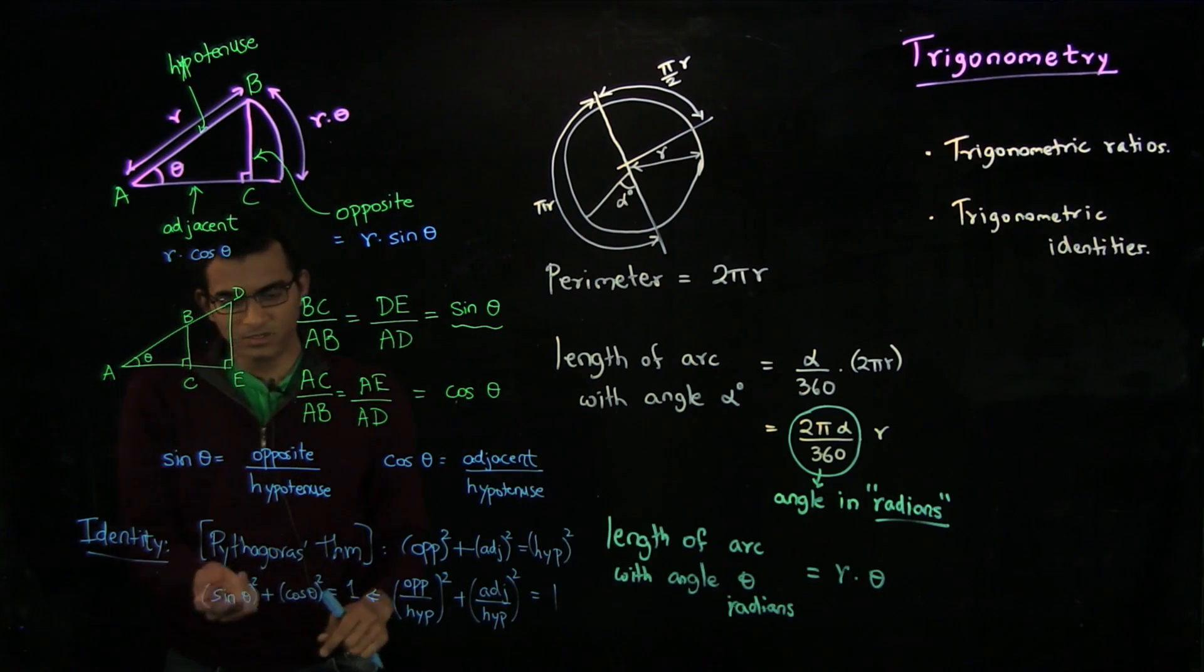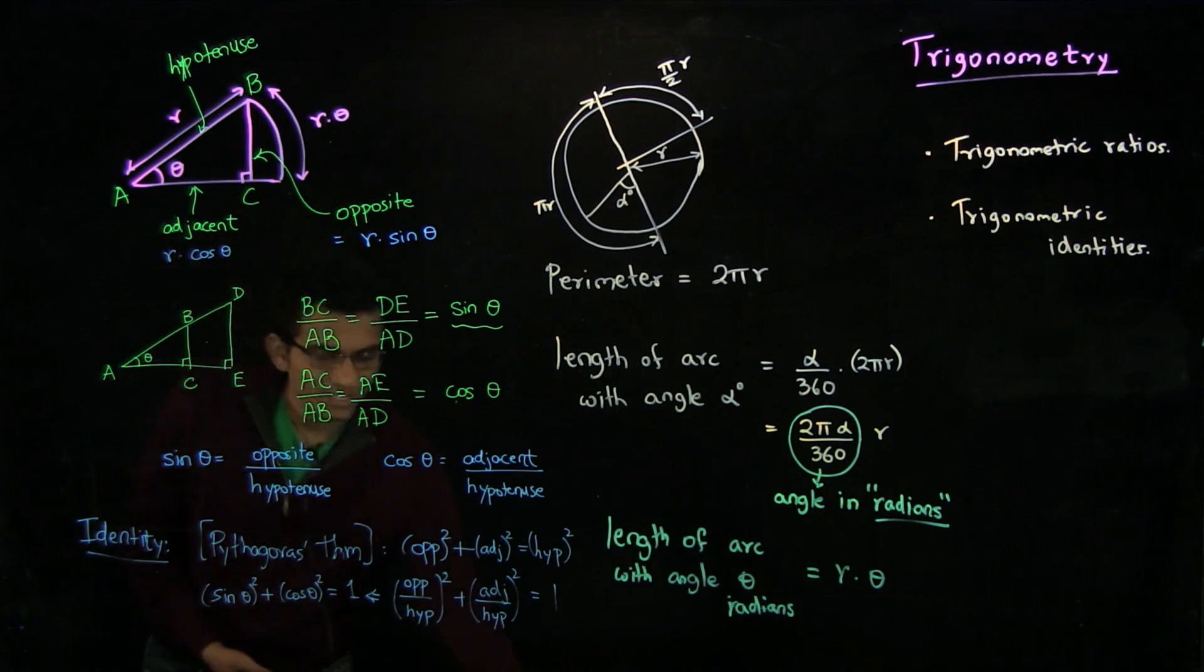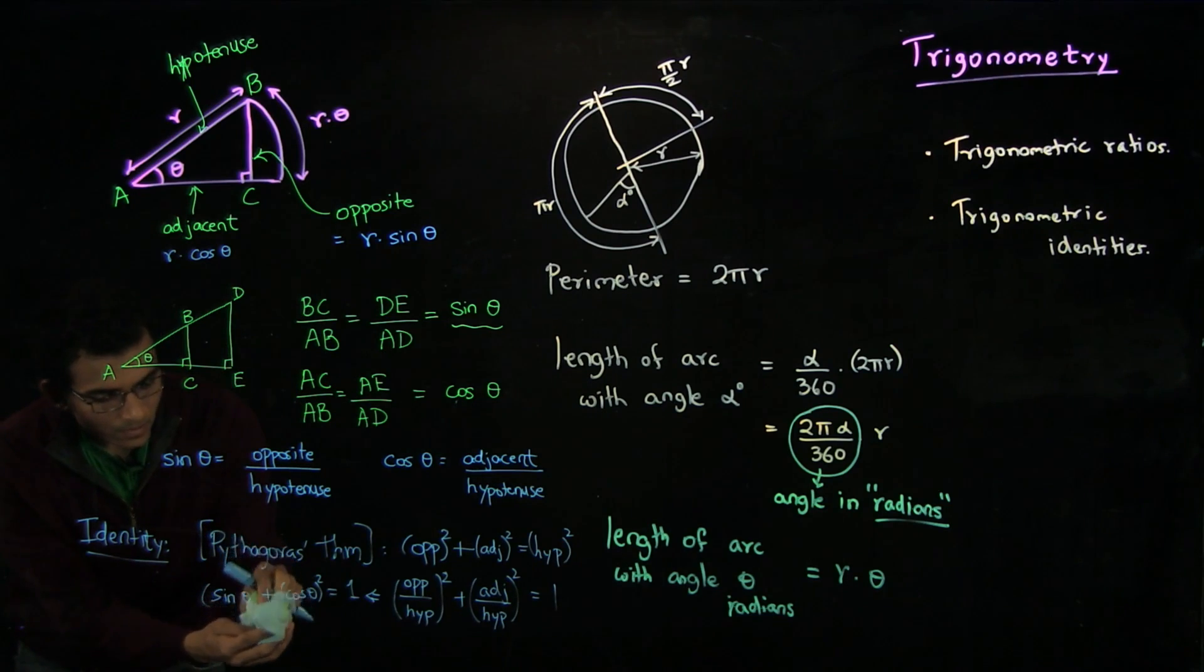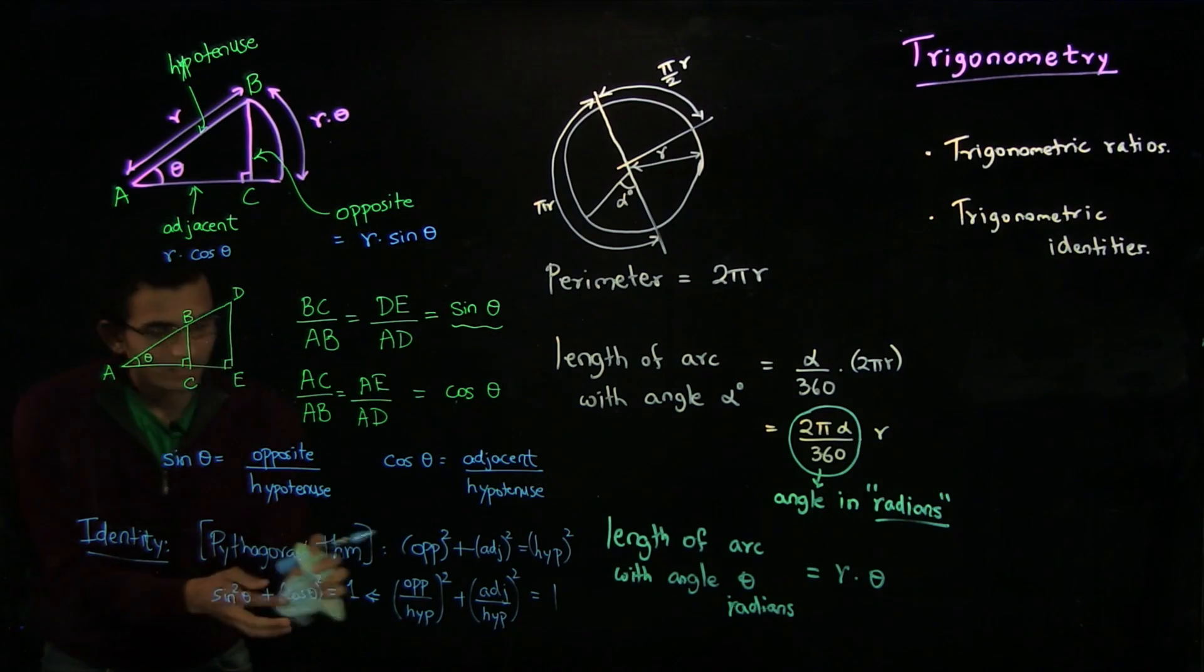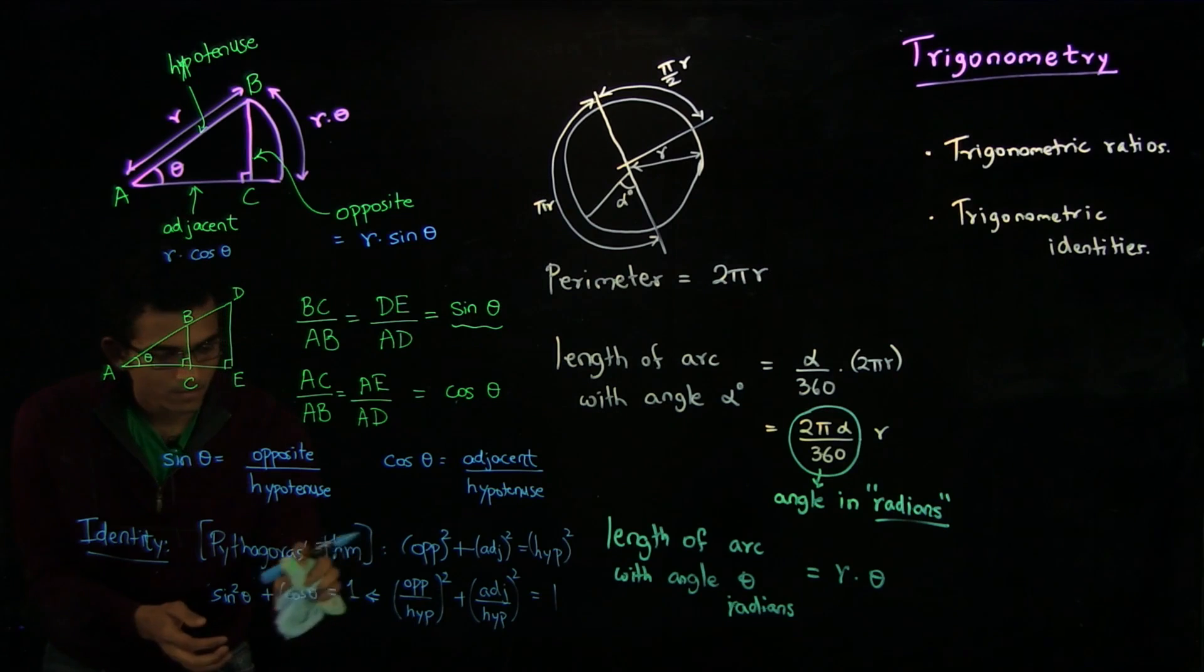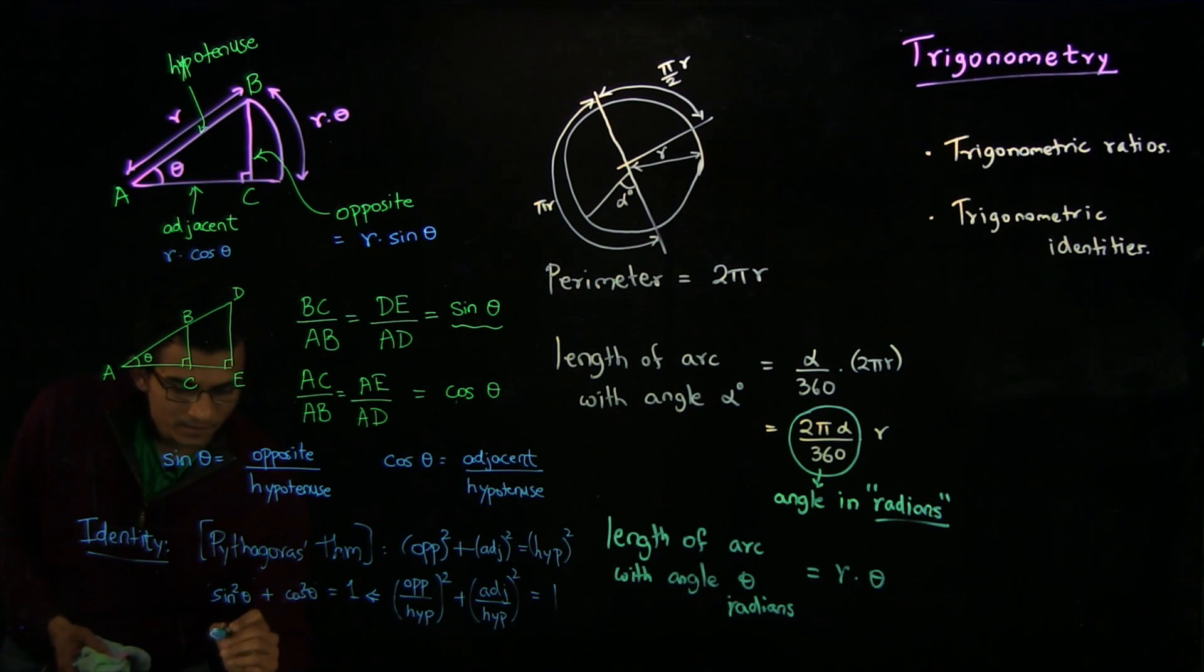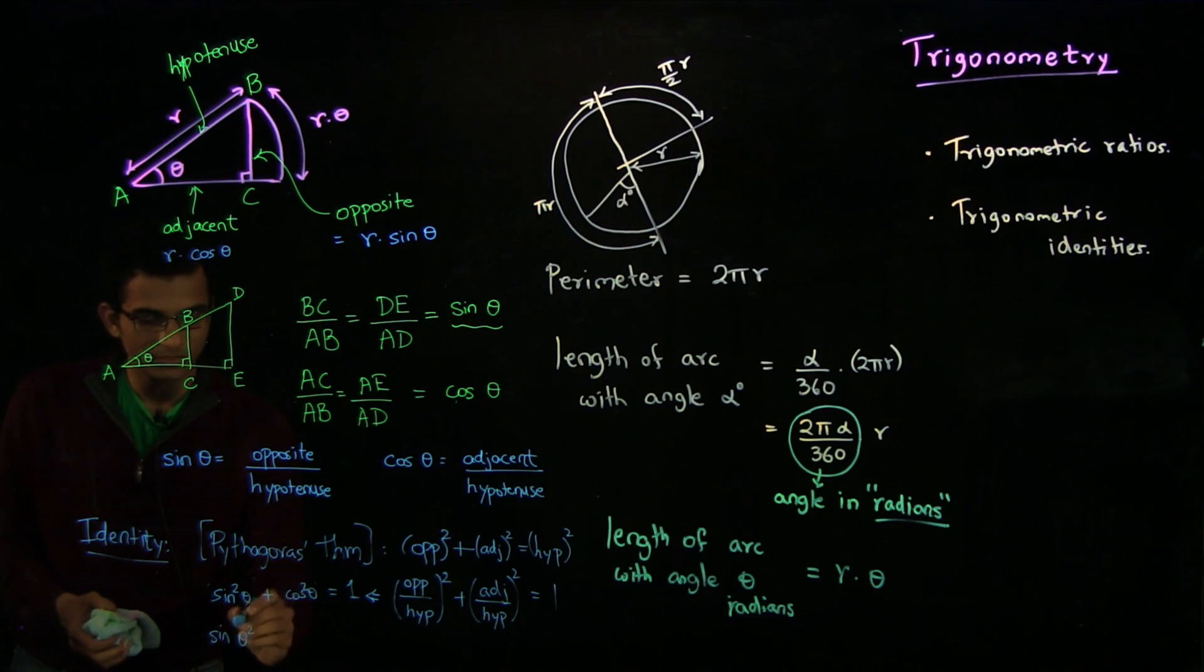But if you look at our definitions of sin theta and cos theta, this tells us that sin theta square plus cos theta square is equal to 1. Now, a usual convention to write sin theta square is like you do not want to write the brackets all the time. So what you do is you write it as sin square theta and cos square theta so as to not confuse with, for example, sin theta square. This would mean sin of theta square, whereas this is sin of theta the whole square.